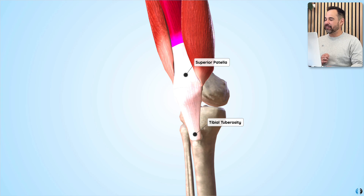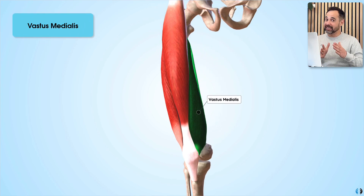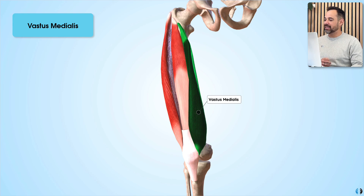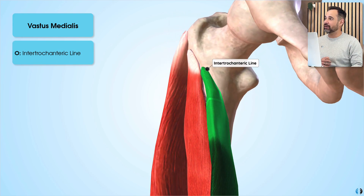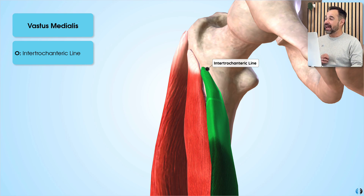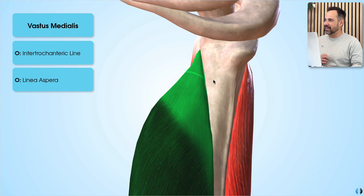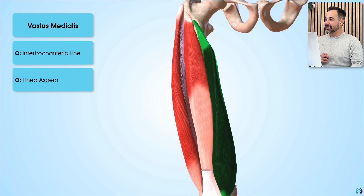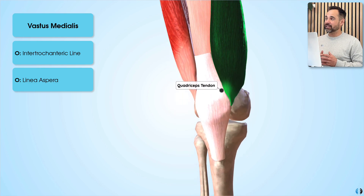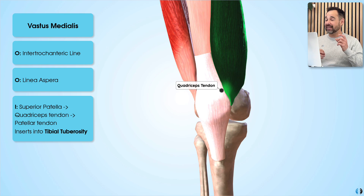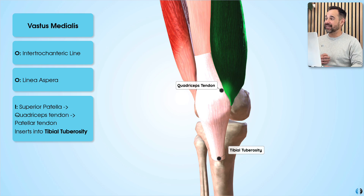Next we have the vastus medialis muscle on the medial side. If we take off the rectus femoris muscle, we can see how this muscle originates from the intertrochanteric line — the line in between the two trochanters of the femur — as well as a second attachment to the linea aspera of the femur. This muscle also runs down and, like the rectus femoris, it inserts into the quadriceps tendon via the superior patella, and the quadriceps tendon then blends with the patella tendon to insert into the tibial tuberosity of the tibia.